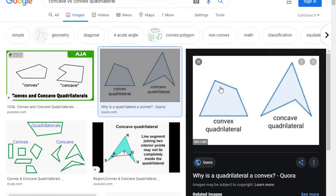Firstly, what is convex quadrilateral? Here, this is convex quadrilateral, this is concave quadrilateral.